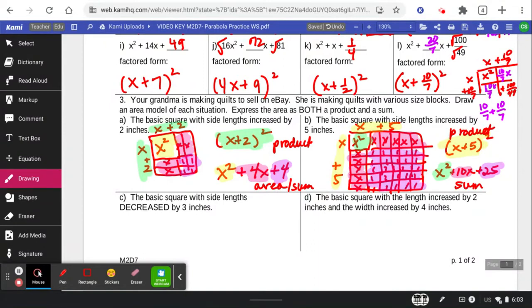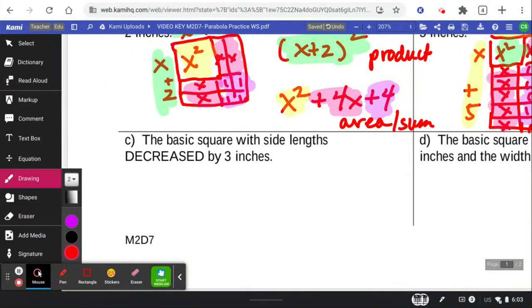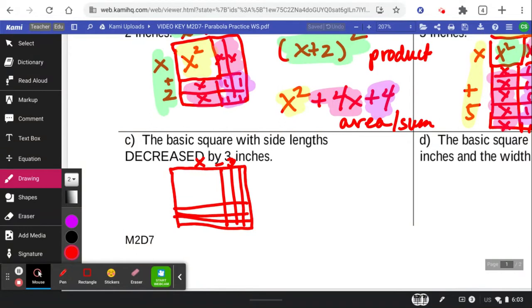Last, the basic square with side lengths decreased by 3 inches. So we take our basic square and we cut into it 3. So it's an x minus 3. So that's how we show the minuses on here. As our product.